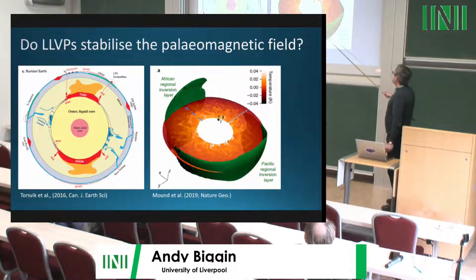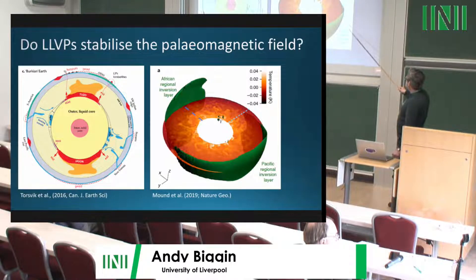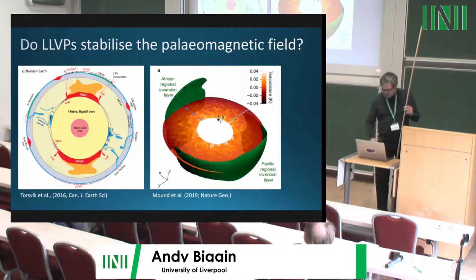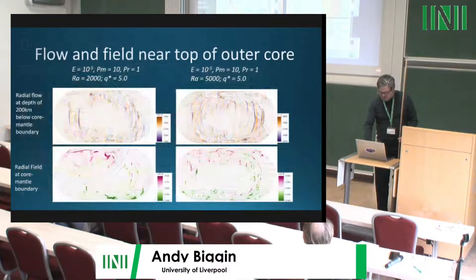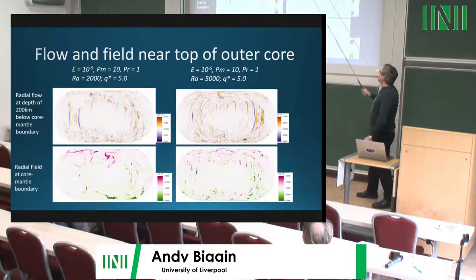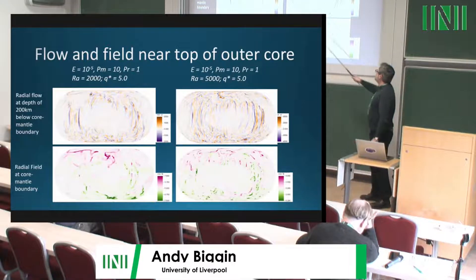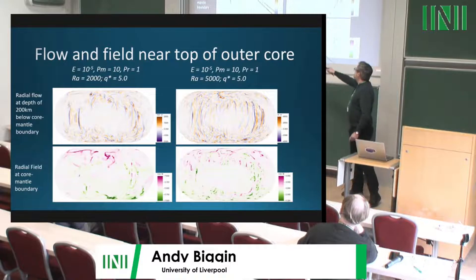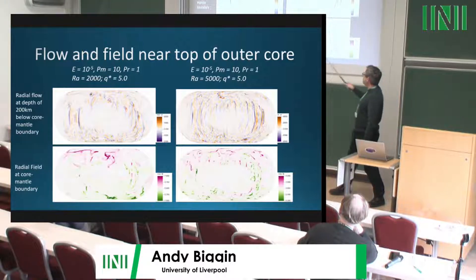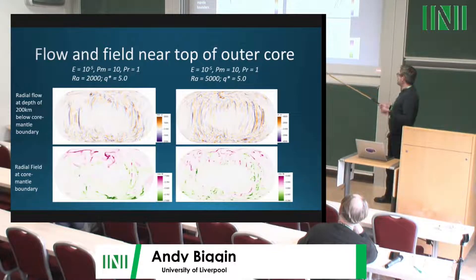John Mound and colleagues at Leeds investigated this with non-magnetic simulations, finding that the presence of thermal heterogeneity produces regional thermal stratification — temperature inversions only beneath areas with high heat flow. Magnetic simulations by Chris Davies and John Mound at Ekman number 10⁻⁵ with quite different Rayleigh numbers both clearly show the influence of low heat flow in suppressing radial flow just below the core-mantle boundary, with a clear effect on the magnetic field.